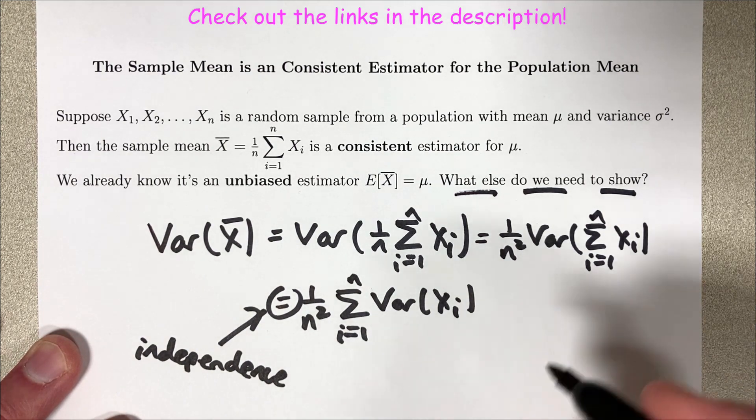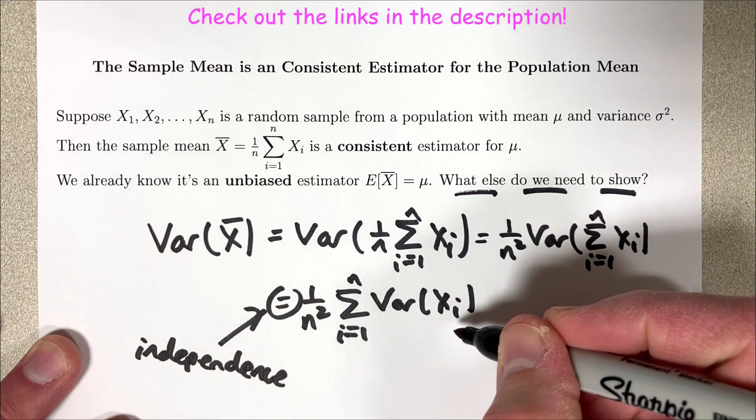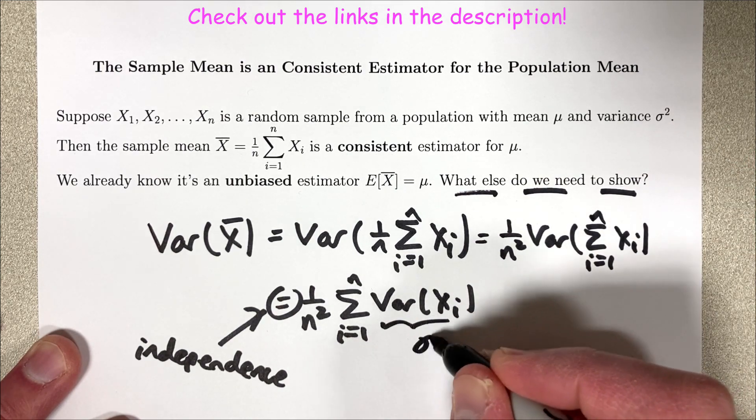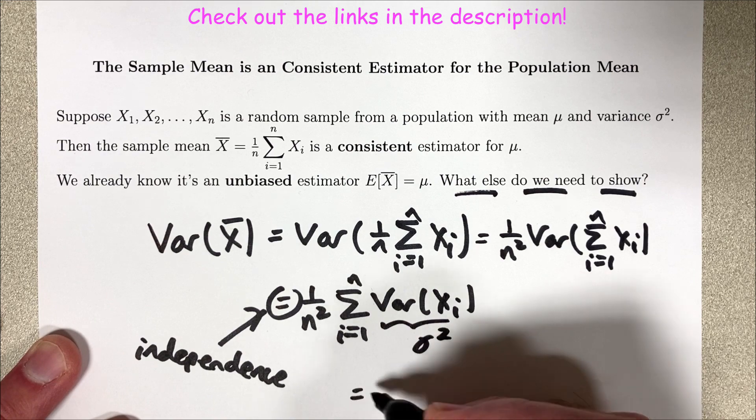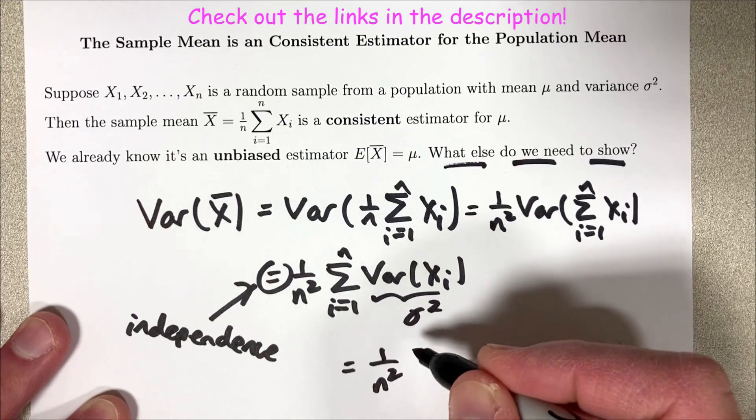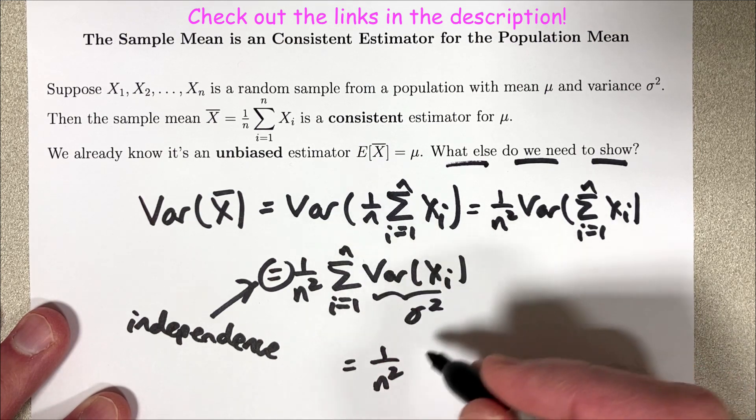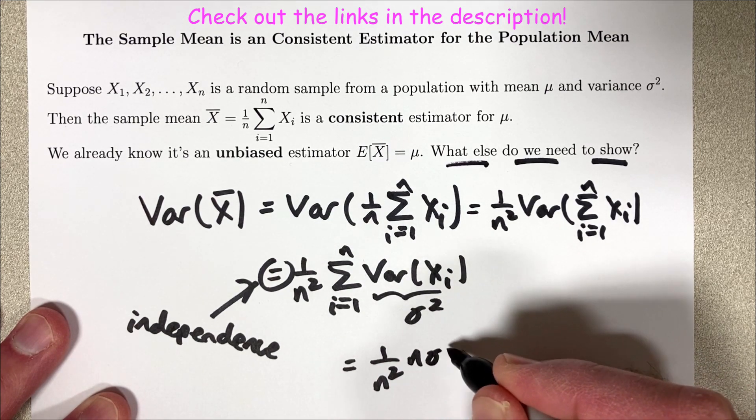Now what do we do? We need to use the fact that the variance of each xi is the same. It's sigma squared. Each of these is a sigma squared. Therefore this becomes 1 over n squared times the summation of a bunch of sigma squareds. How many of them? n of them. So you get n times sigma squared.